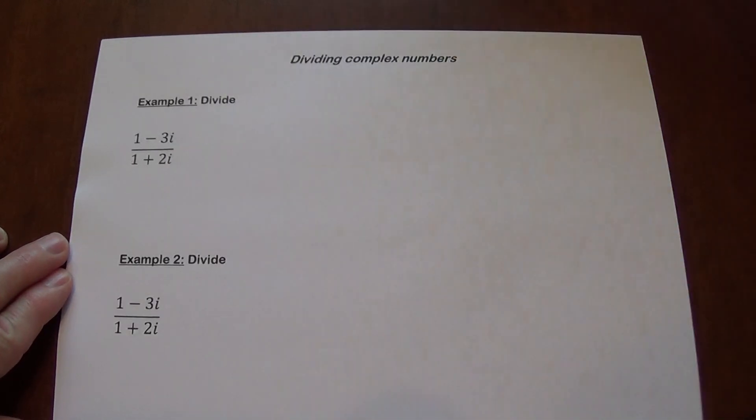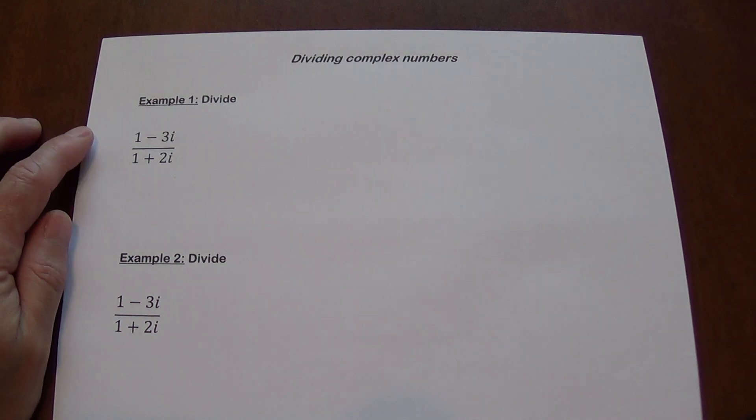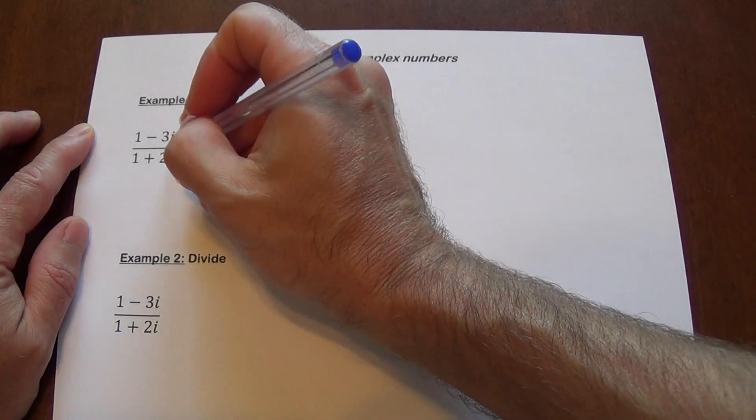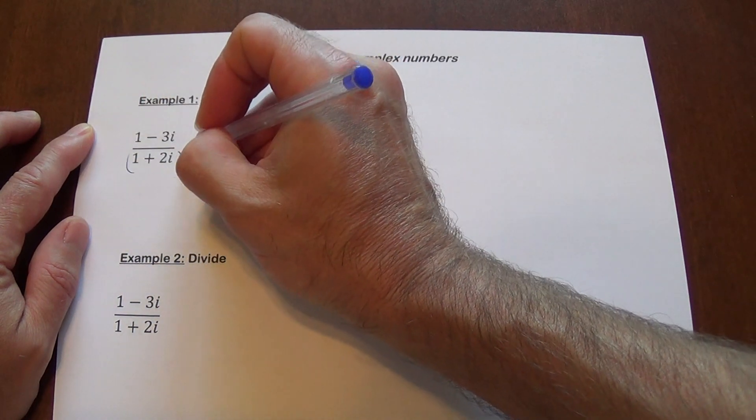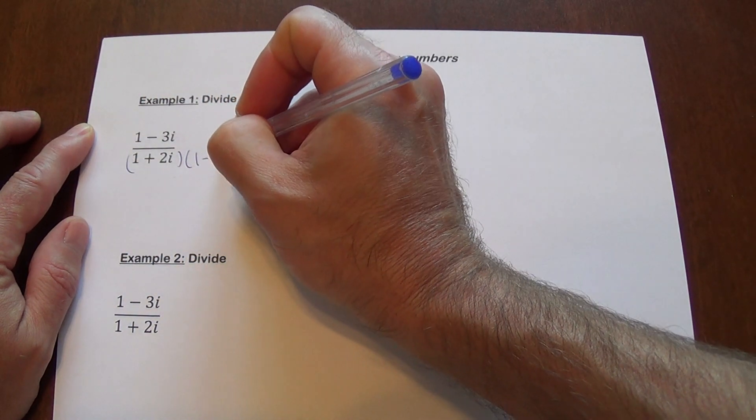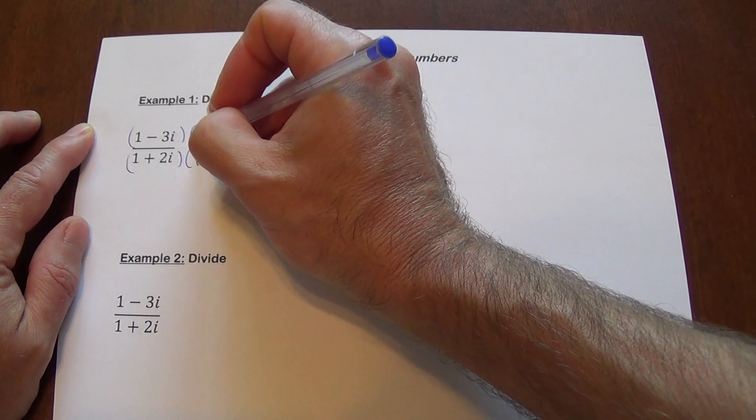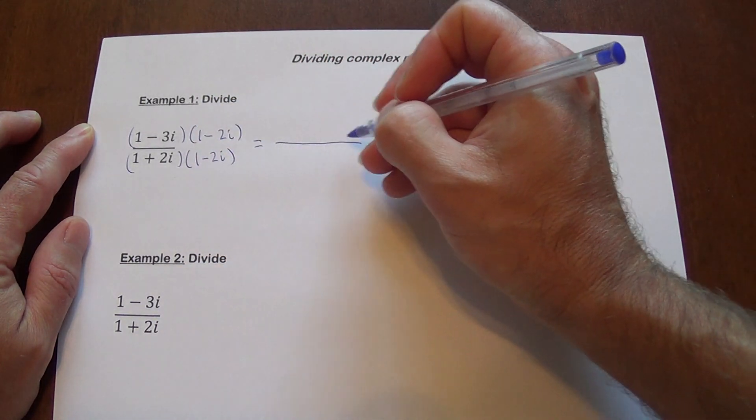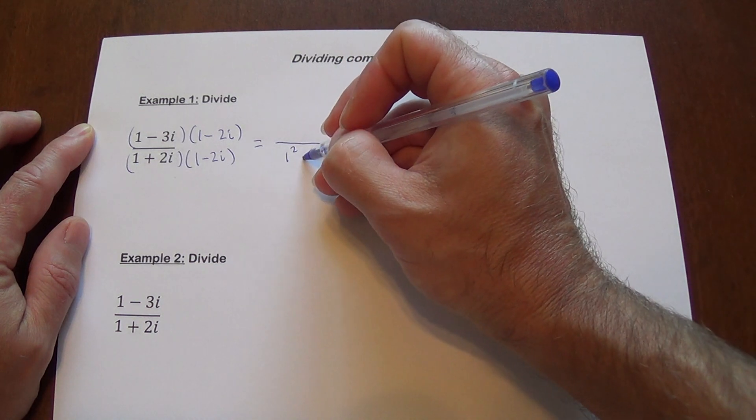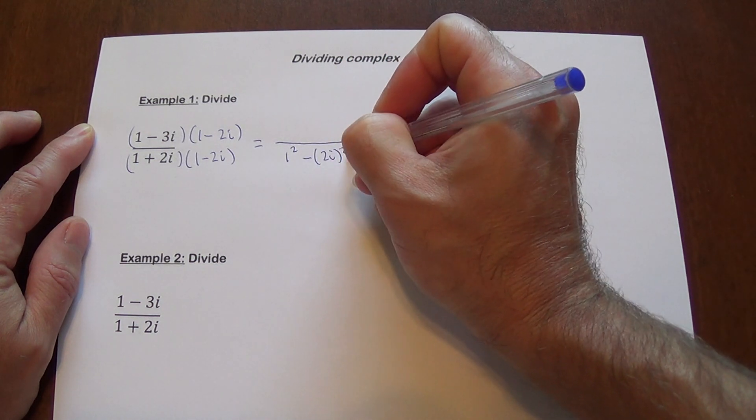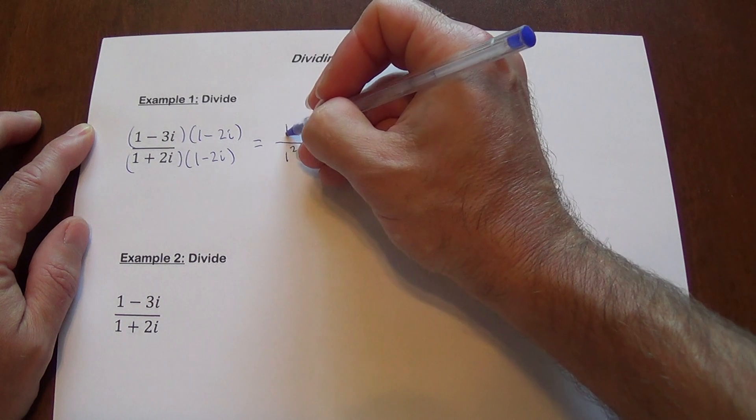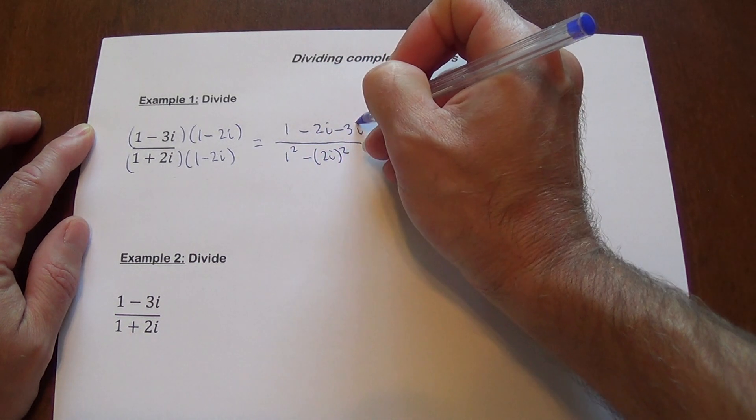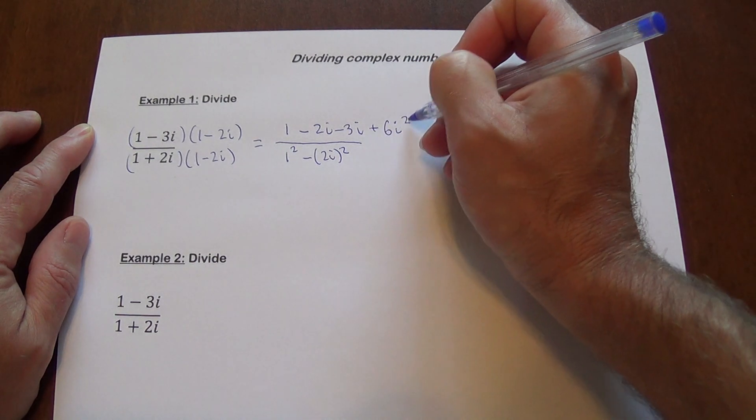Let's continue. So now the problem. Example 1, so the bottom is 1 plus 2i. The conjugate is 1 minus 2i, so multiply the numerator by the same thing. So this is going to give us 1 squared minus 2i squared. The numerator we're FOILing, 1 minus 2i minus 3i plus 6i squared.